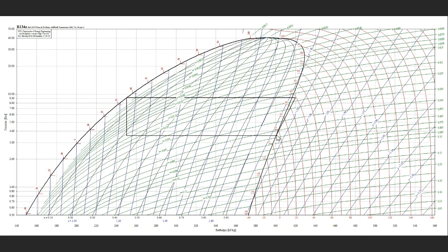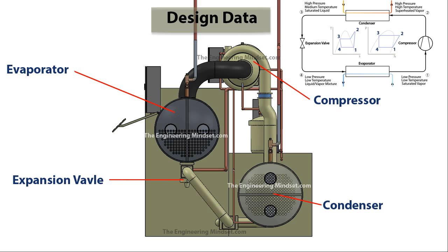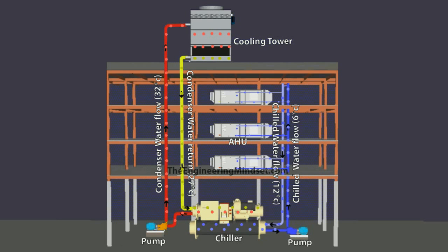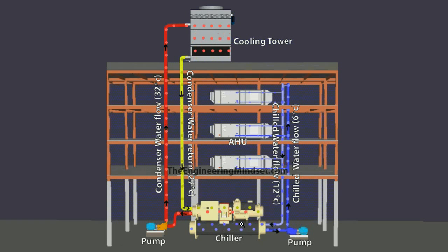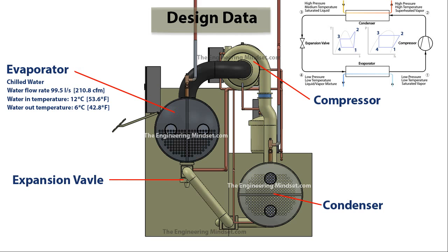We are going to look at the data points at all four points — one, two, three, and four. Before we look at the refrigerant properties, let's look at what's happening with the water through the evaporator and condenser. In the evaporator, the chilled water is cycled — it rises through the risers out to the AHUs and comes back carrying the unwanted heat from the building. In this example, the water is flowing at around 99.5 liters per second, approximately 210 cubic feet per minute. The water returns at around 12°C (53.6°F) and leaves the evaporator at around 6°C (42.8°F) after dumping its heat.